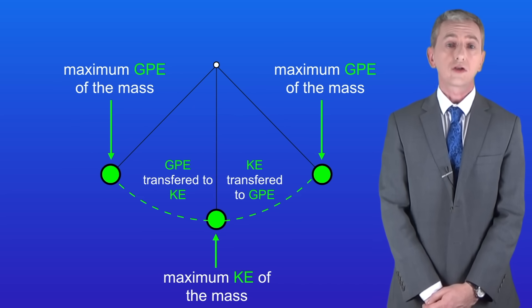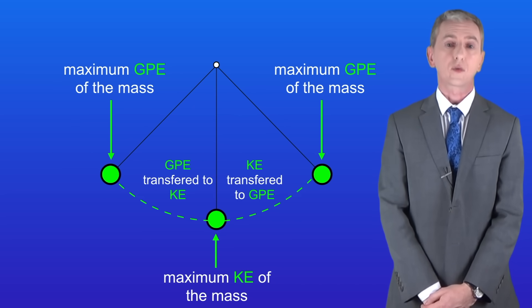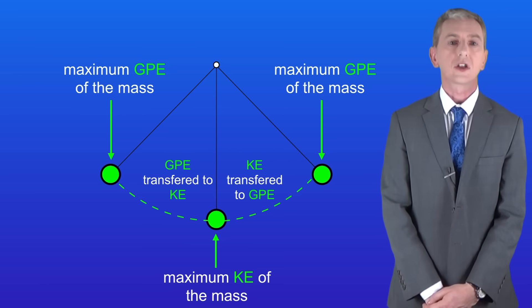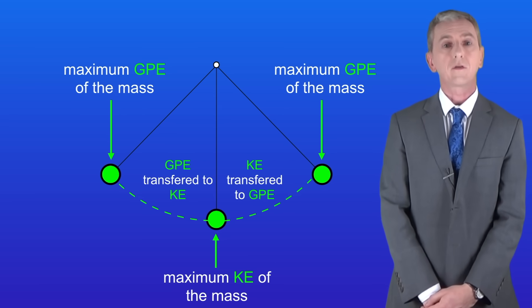In the last video we looked at the energy transfers taking place when a pendulum swings. We saw that gravitational potential energy is transferred to kinetic energy and then vice versa.